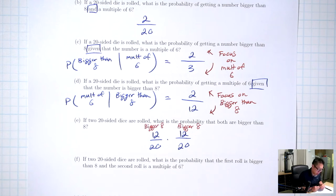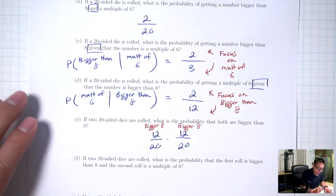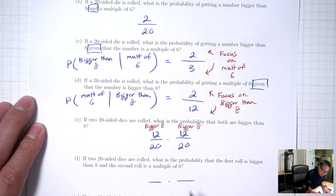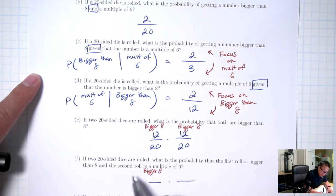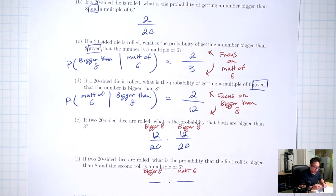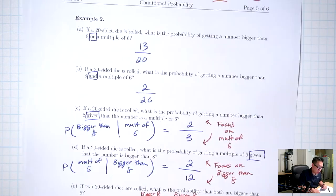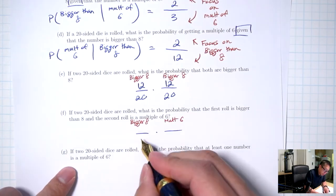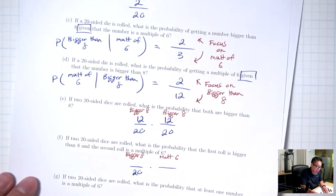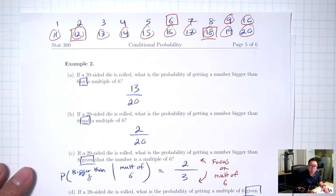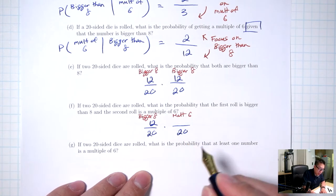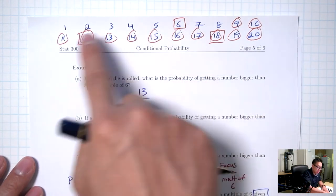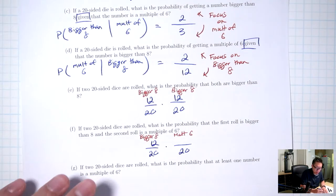Part F: if two 20-sided dice are rolled, what's the probability that the first roll is bigger than 8 and the second roll is a multiple of 6? Two dice, so two fractions. First fraction: bottom is total — 20; top is bigger than 8 — 12. For dice you don't reduce, so the second fraction bottom is 20. Multiples of 6 are the boxes: 3. No reducing needed, so it's the full 3.